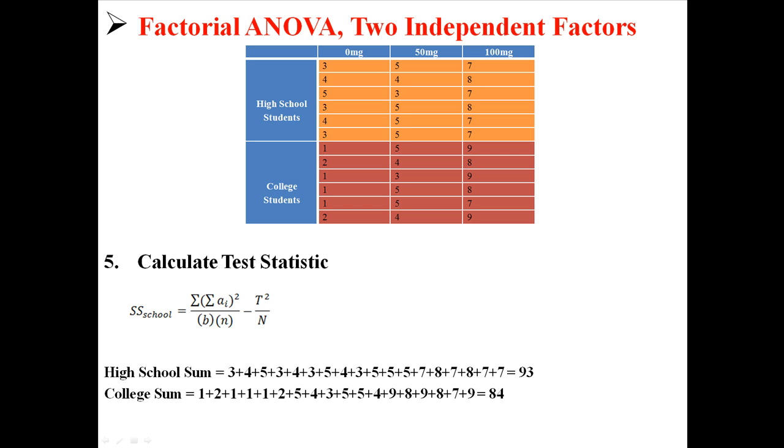So that's what this looks like. Our a variable has two levels. We have a1, which is high school students, and a2, which is college students. So we need to find the sums of both of those conditions and then square those. And that's what goes on top. So you see we have 93 squared plus 84 squared. On the bottom we have b times n because there are three b groups. n is 6 because there are 6 people in each condition. t is just the total sum, so that's 93 plus 84, which is 177. And capital N is 36 because that's our total number of participants. So solving for that we find a sum of squares school of 2.25.